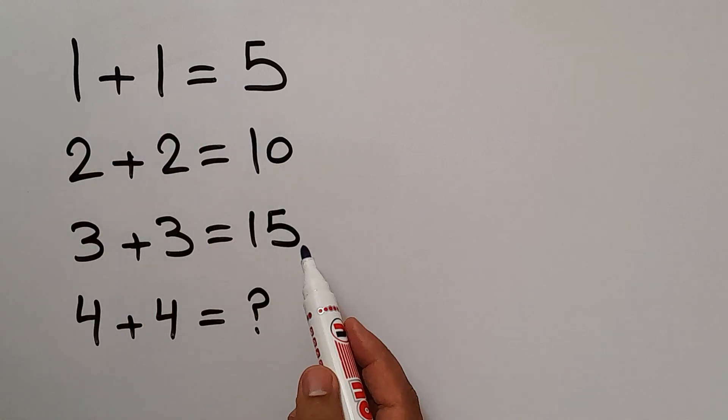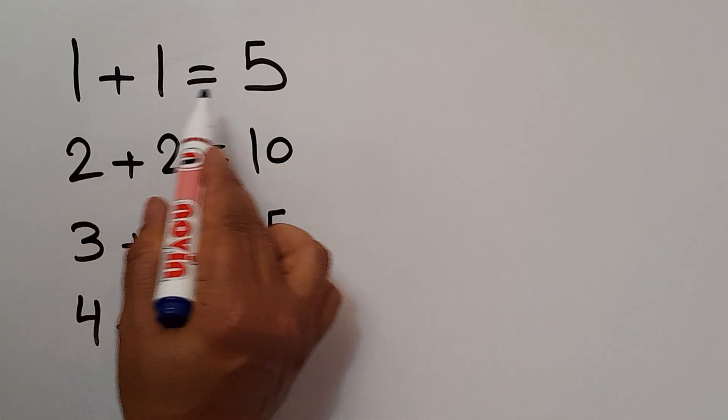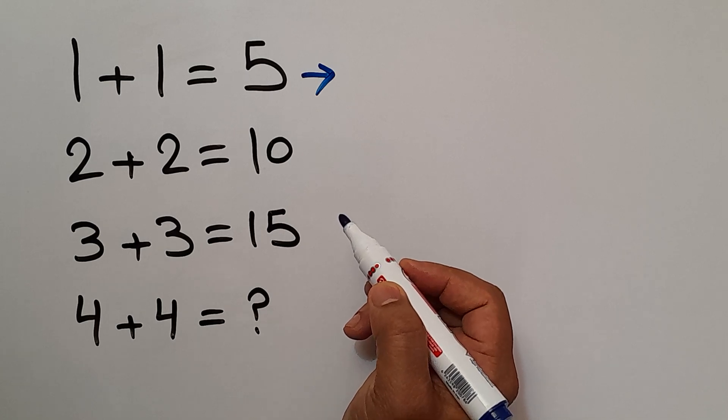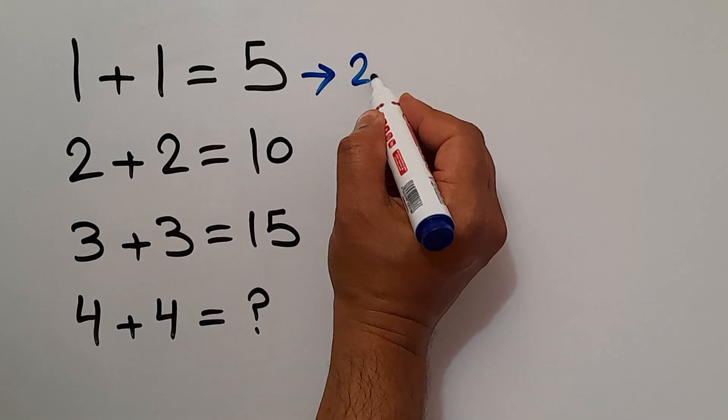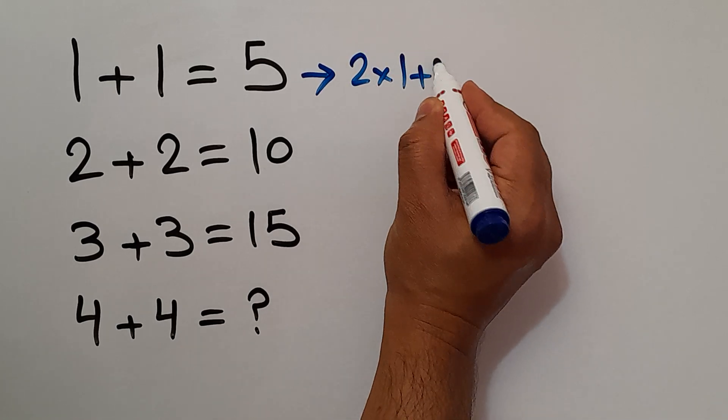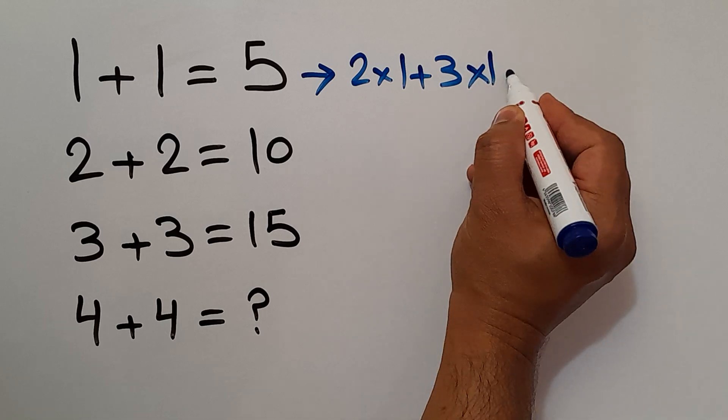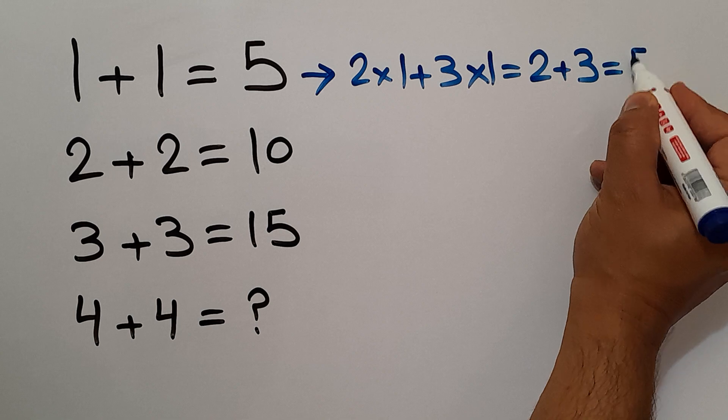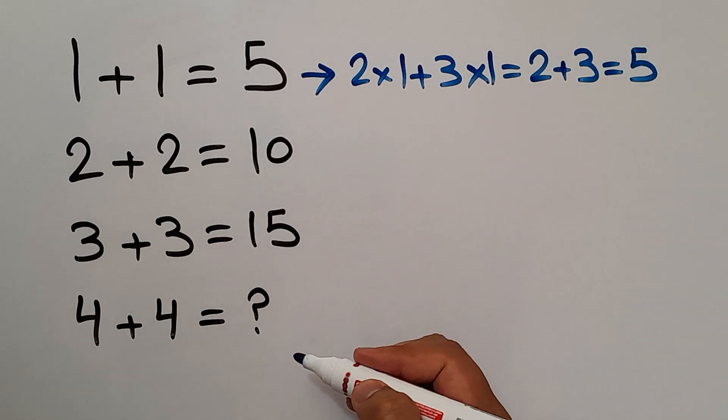In the first row, we have 1, 1, and 5. 2 times 1 plus 3 times 1 will be equal to 2 plus 3, and this is equal to 5, the right-hand side number.